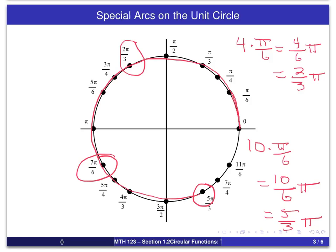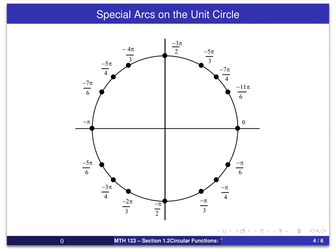We also measure arcs in the negative direction as well, and those arcs are shown in the next slide. You can see the measurements are pretty much the same except we're going in the negative direction. So again, you see −2π/3, and you'll see −5π/3. The −π/3 arc goes all the way around and has a terminal point in the first quadrant.